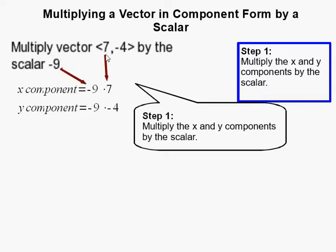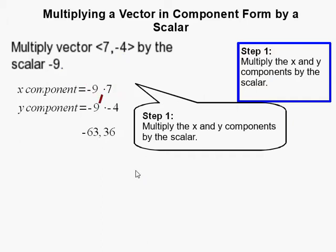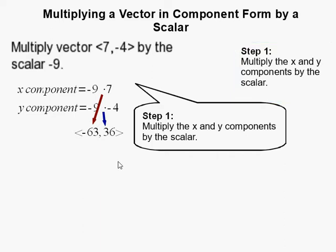negative 9 times 7, and then we have negative 9 times negative 4, which gives us our new vector in component form as negative 63 comma 36. You have to remember to write it properly in vector form here, and that completes our problem.